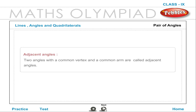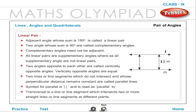Pair of Angles. Adjacent Angles: Two angles with a common vertex and a common arm are called adjacent angles. Linear Pair: Adjacent angles whose sum is 180 degrees is called a linear pair. Two angles whose sum is 90 degrees are called complementary angles.